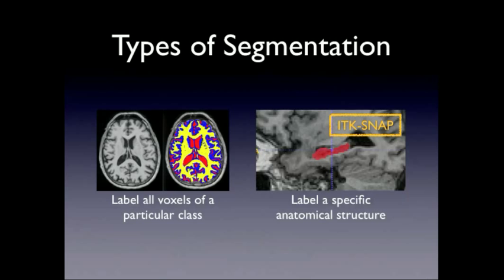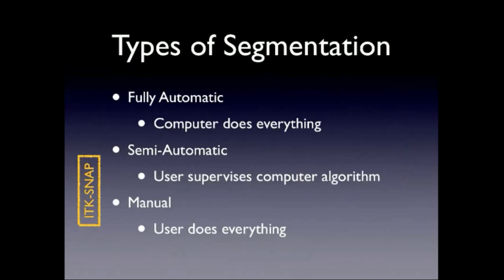ITK-SNAP is suited for the second kind of problem — it's not a tissue classification tool. It's more focused on something like the hippocampus in this picture, something you want to segment where it's not just distinguished from everything else by having a certain intensity profile. There are different types of segmentation algorithms; quite a few are fully automatic. The first stop, if you have a segmentation problem, is to check if there are dedicated fully automatic methods, including more generic ones like multi-atlas segmentation, which is very effective for many anatomical structures.